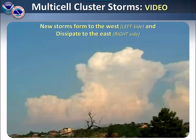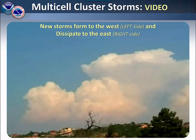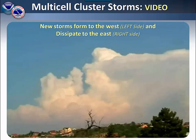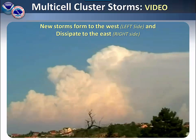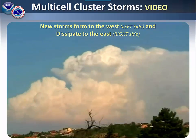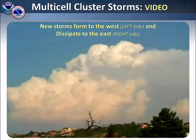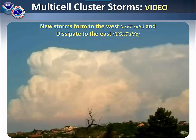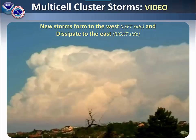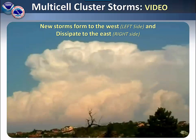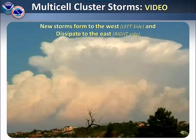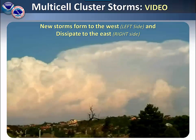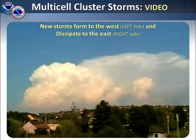Here is an example of multi-cell thunderstorms. These storms are moving from the left to the right. You can see that the storms are building on the right side, but then they start to collapse as the storms on the left start to build up. These will move along to the east, then they'll similarly start to collapse, and new storms will form to the west of that.